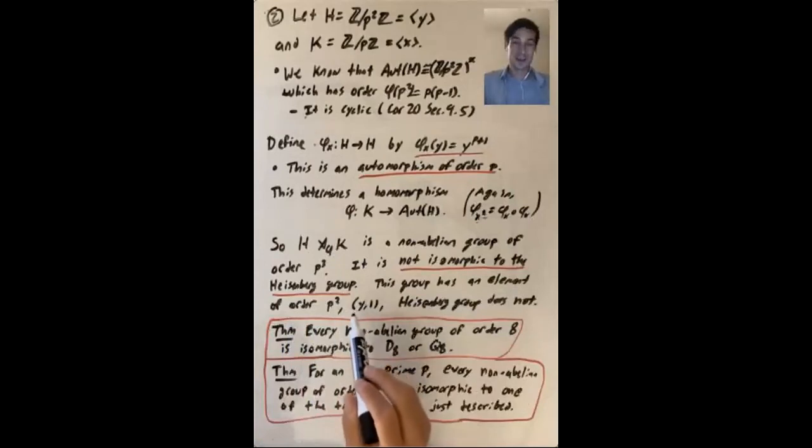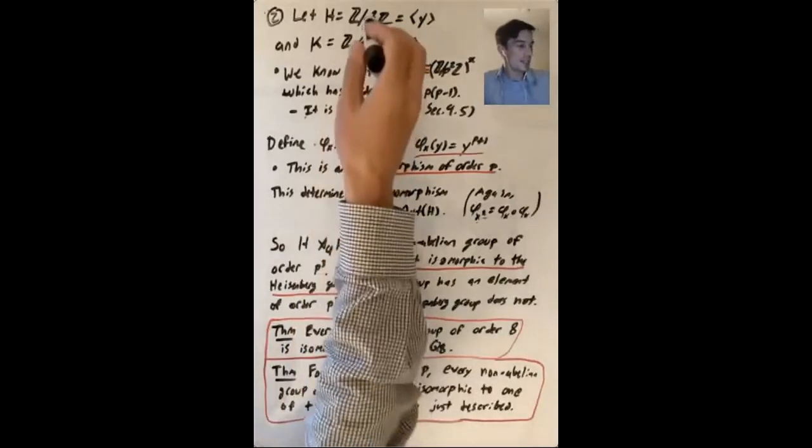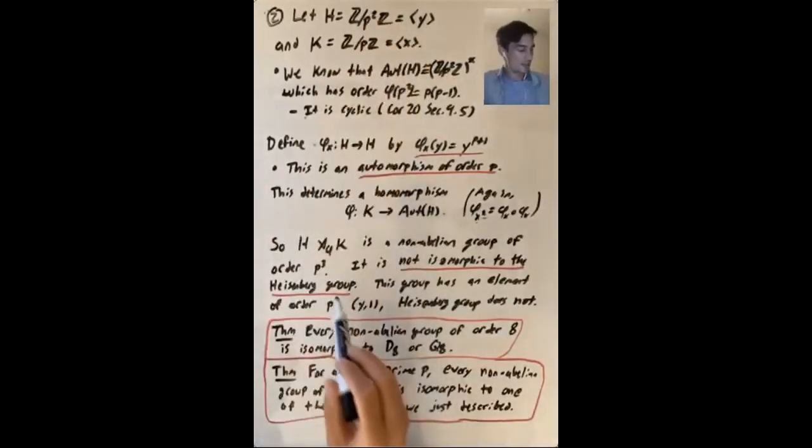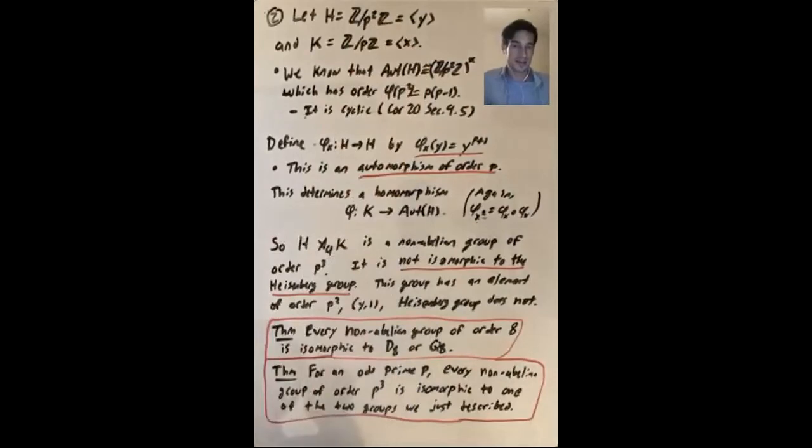There's this subgroup H tilde isomorphic to H. So because H has an element of order p squared, so does this semi-direct product. And the Heisenberg group does not. So you can check that that's true as an exercise.